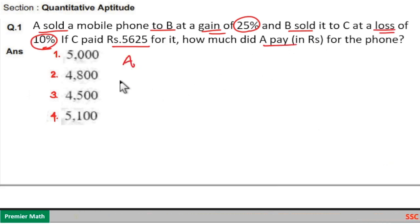Consider A paid 100 rupees for the phone. Now he sold it at a gain of 25%, that is he sold it at 125 rupees to B. Now B sold it to C at a loss of 10%.